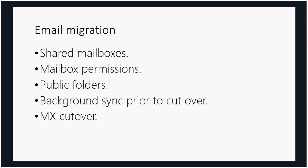For the MX cutover, make sure you have access to your DNS record — that's your point of no return for email. Plan how it's going to happen, how long it will take, what's the worst case, and how you'll potentially roll back. Understand what impact the MX record change will have, how long it takes, and how you'll test to confirm it's working. Don't forget mobile devices — a lot of users are working on mobile and will be very frustrated if they can't get email on their phone. They may be overseas or out of state during the migration, so plan how you'll set up and configure those mobile devices.